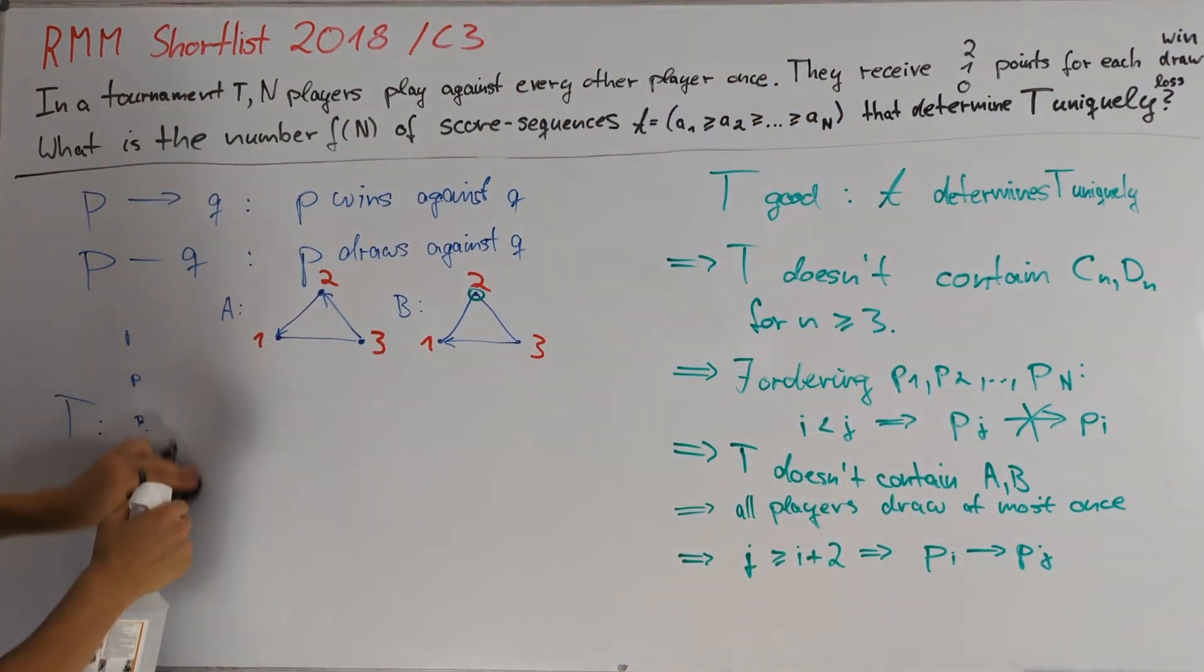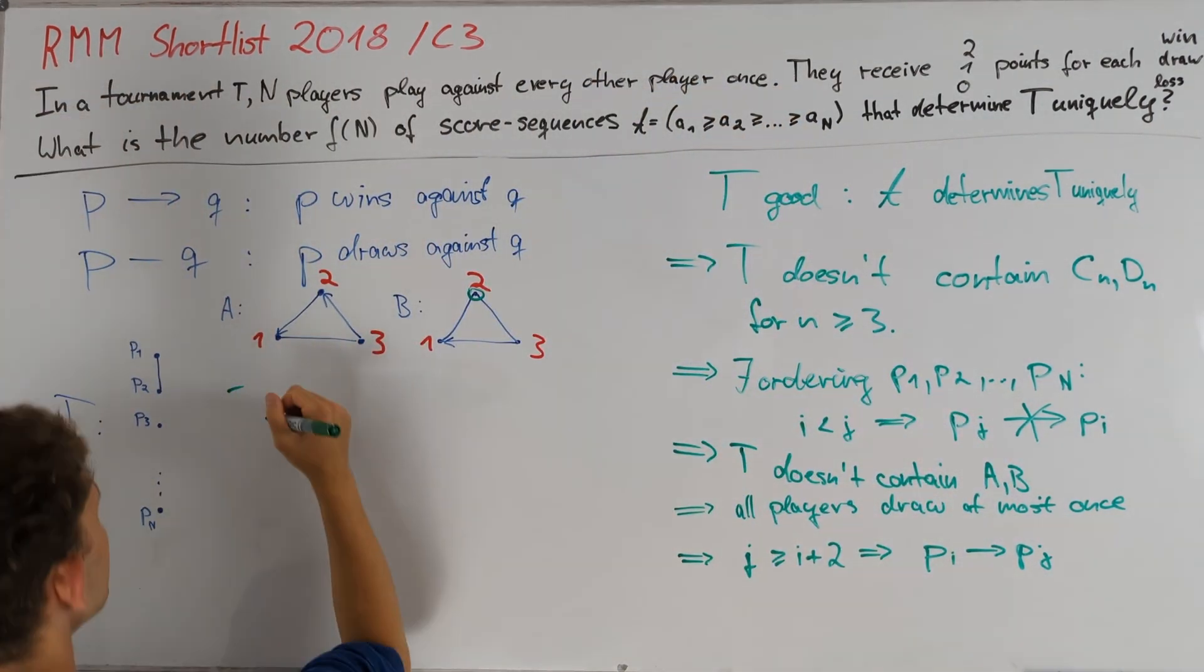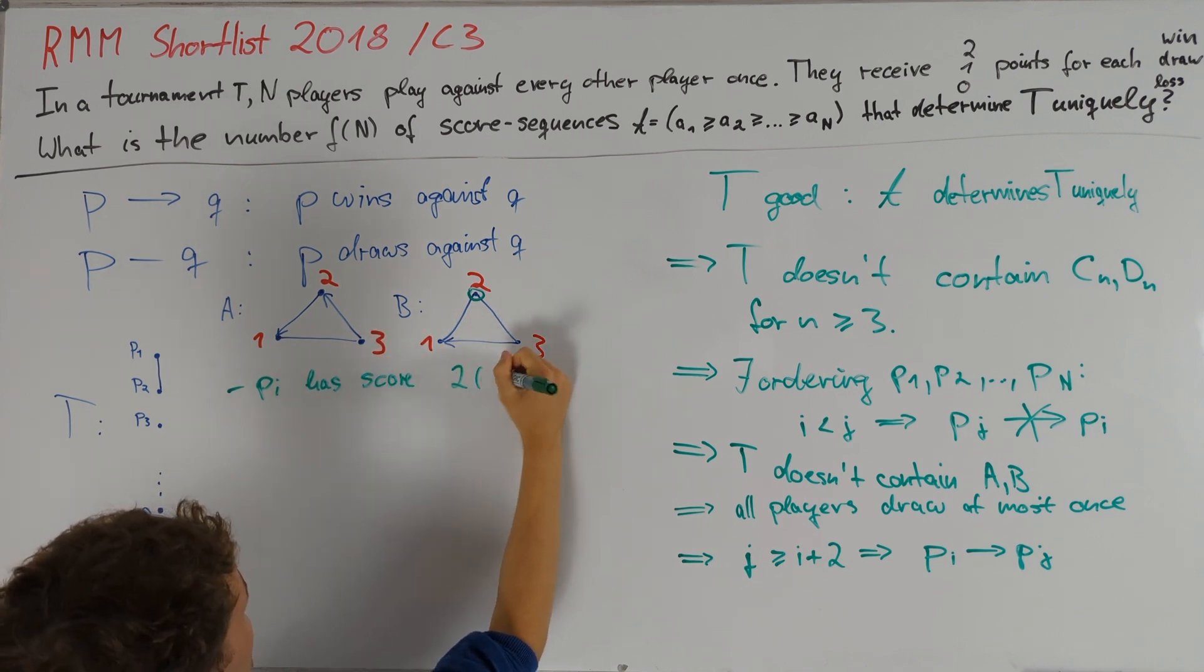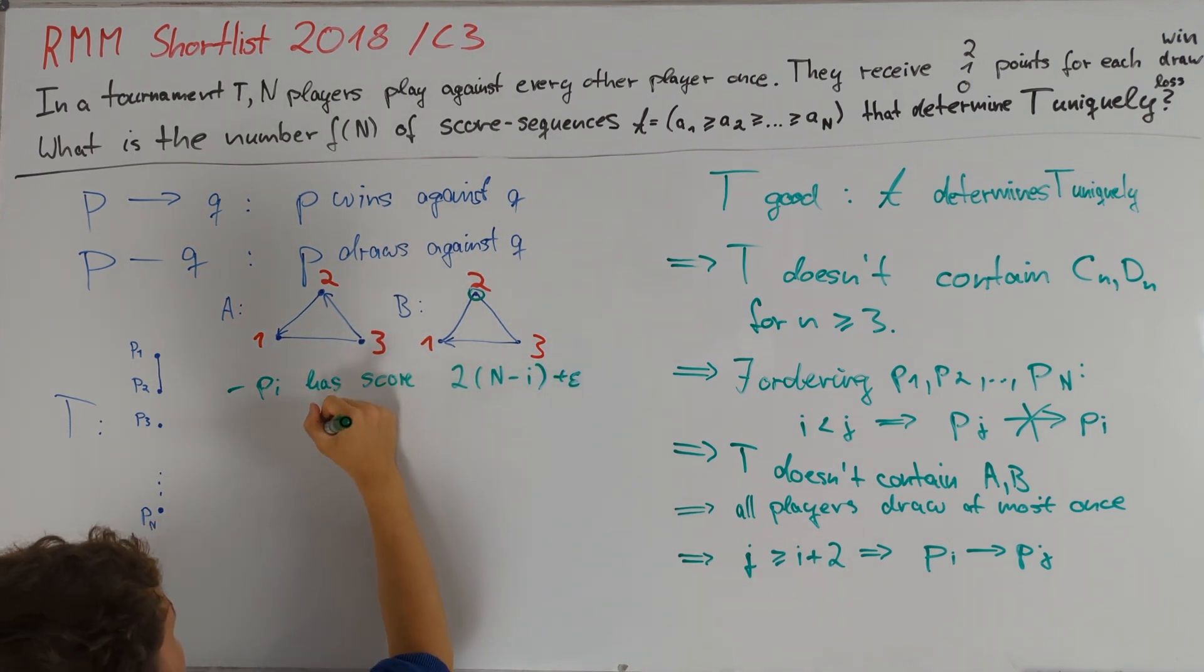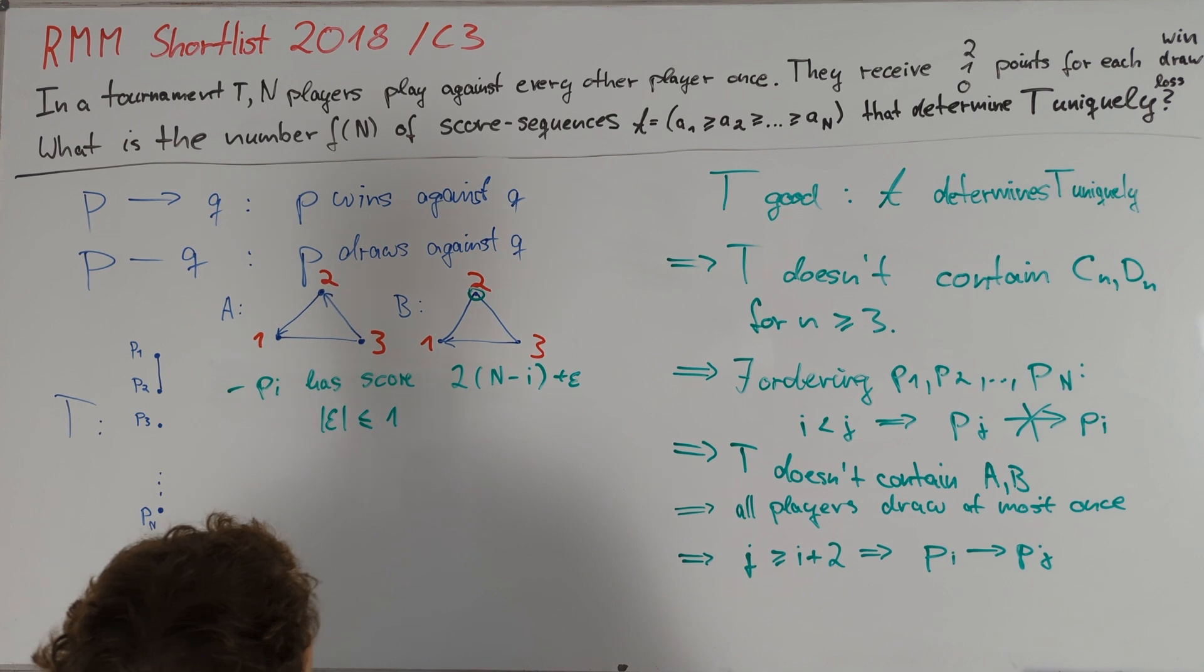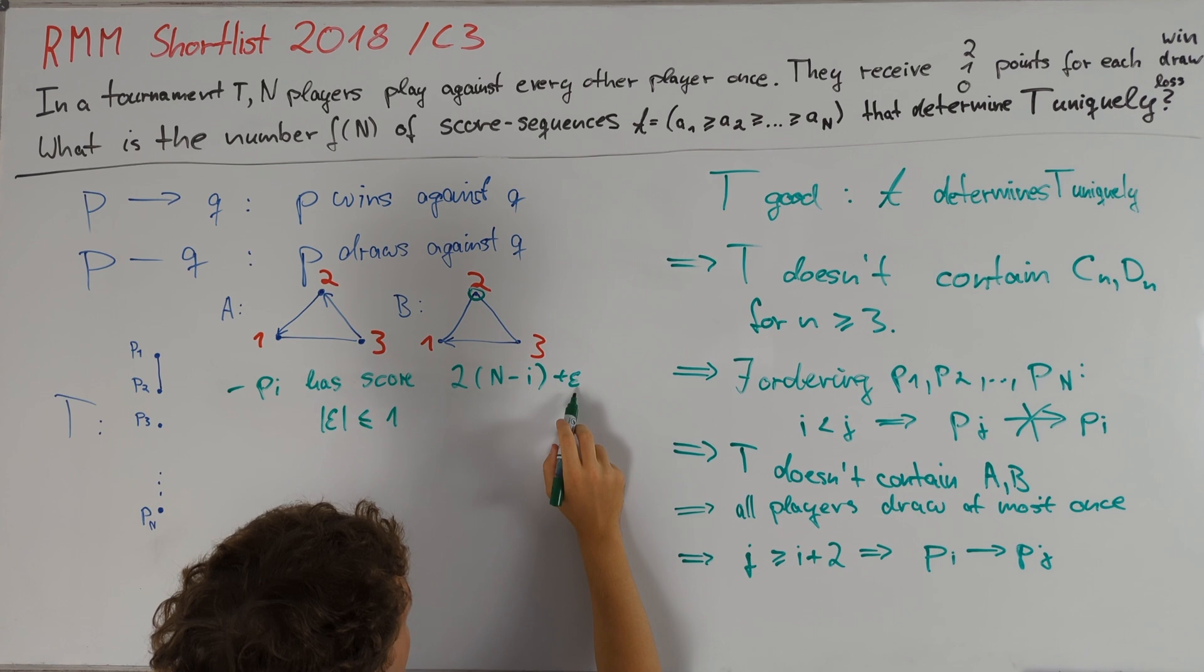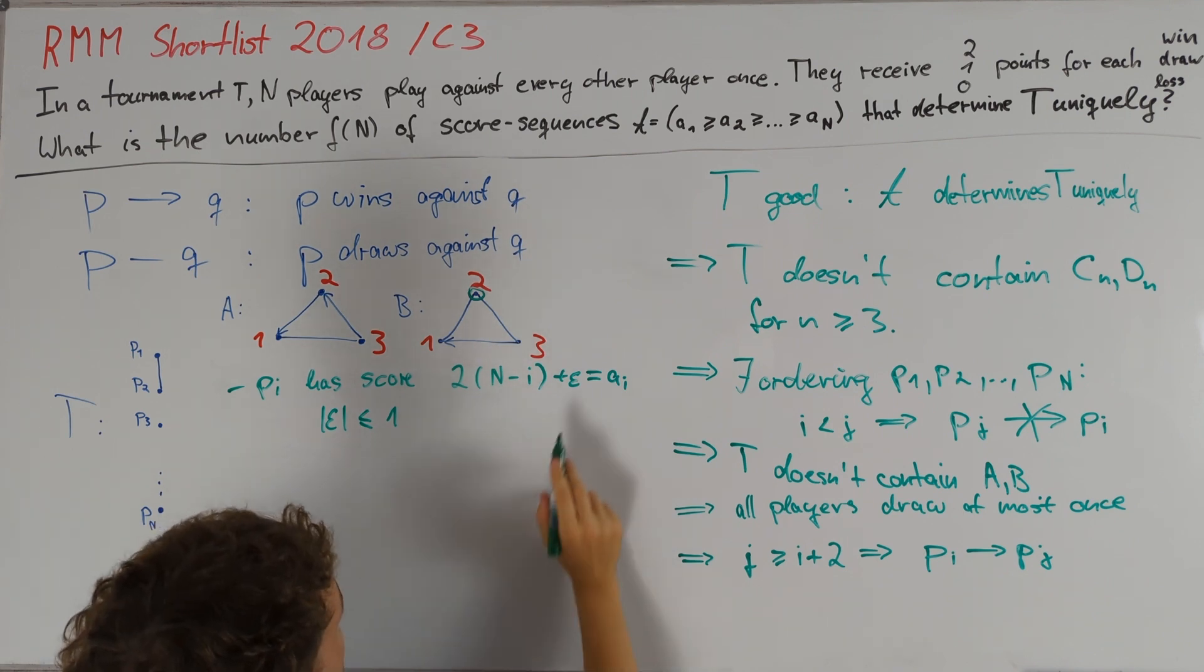This restricts our possible choices for this graph by a large number. Since any player draws at most once, we can deduce that Pi will have score 2(N-i) plus an epsilon which has absolute value less than or equal to one, depending on whether or not Pi draws and whether this draw will be with a player above or below him in the ordering. These numbers will decrease monotonically as we increase the player index i, and therefore this is indeed equal to the score ai. All these graphs give us unique and pairwise distinct score sequences ai.